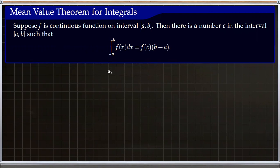In this video we will talk about the Mean Value Theorem for integrals. The theorem says: suppose f is a continuous function on an interval [a, b], then there is a number c in the interval [a, b] such that the integral from a to b of f equals f(c) times (b minus a).